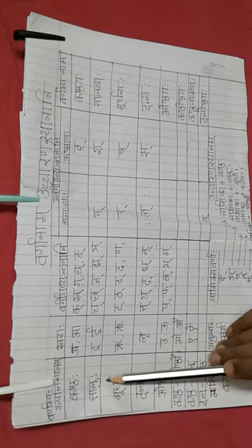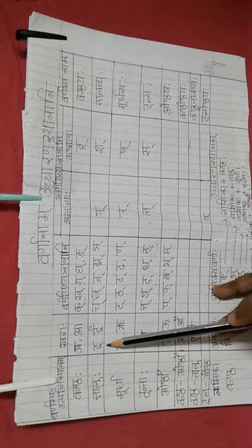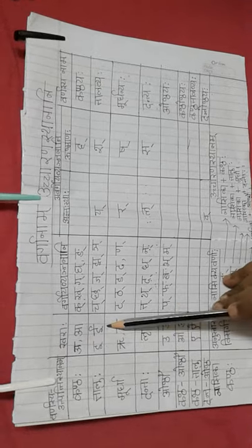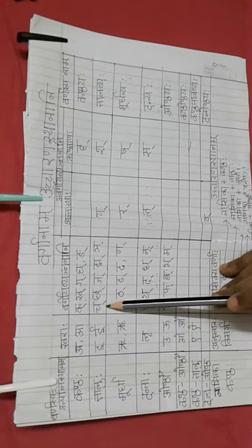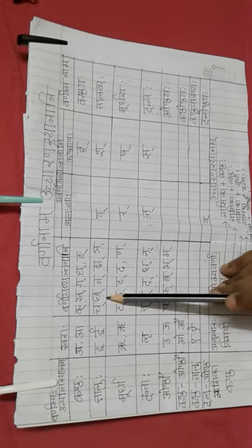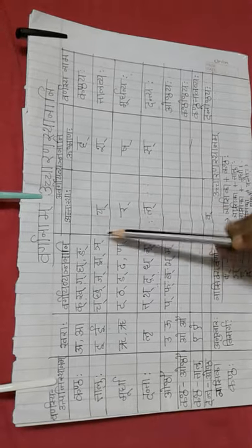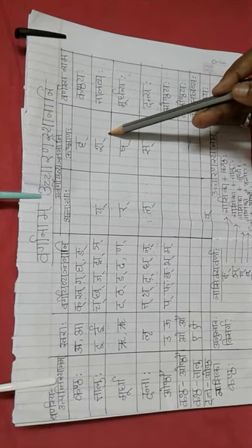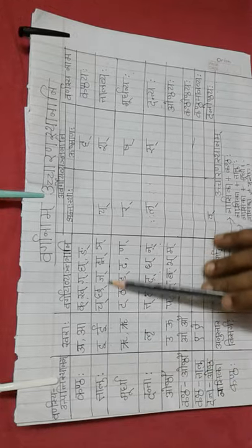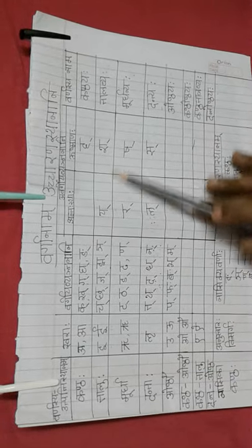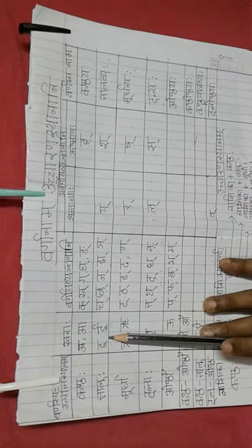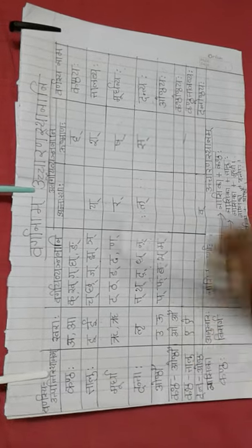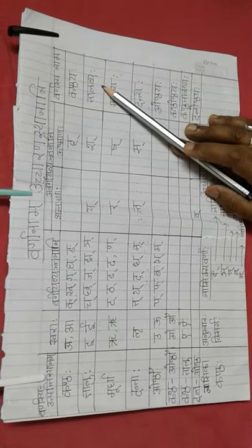Next, talu. E, ee — these two varnas. Then vajanvarana: cha, cha, ja, cha. Antastha: ya. And ushmanyaha. So all these varnas, when we pronounce them, our tongue will touch talu. That's why it's called talabyaha.